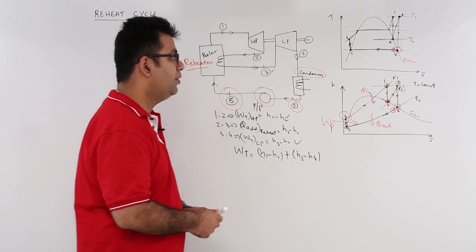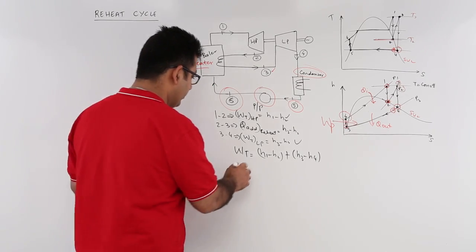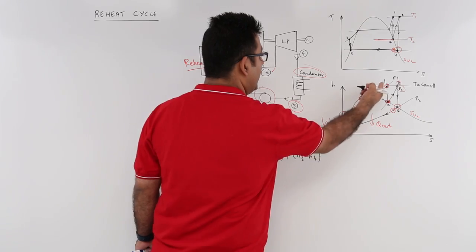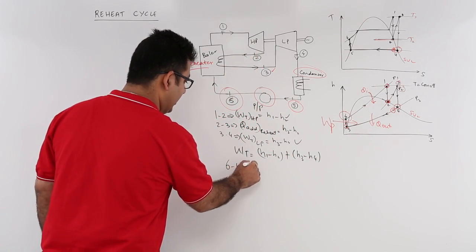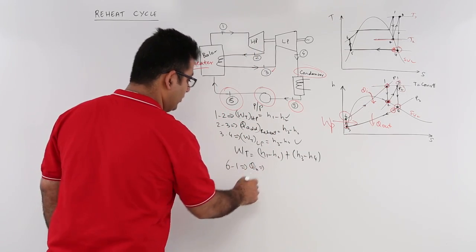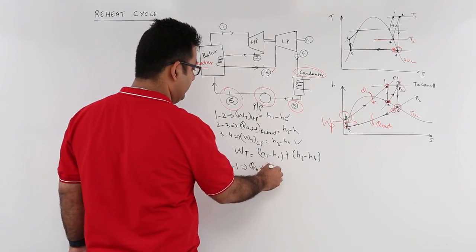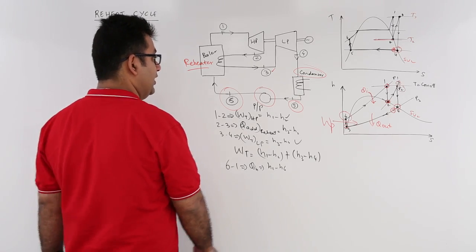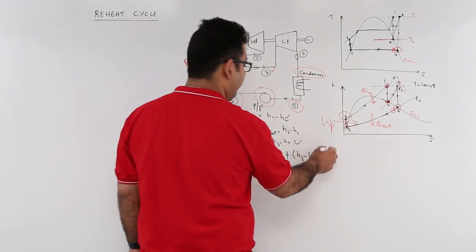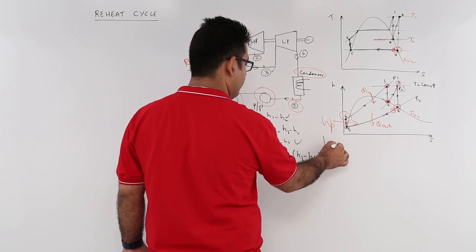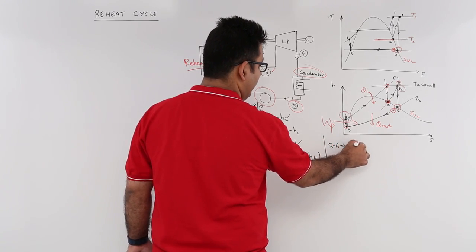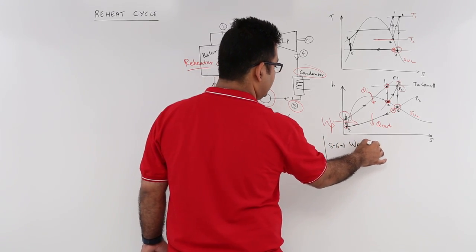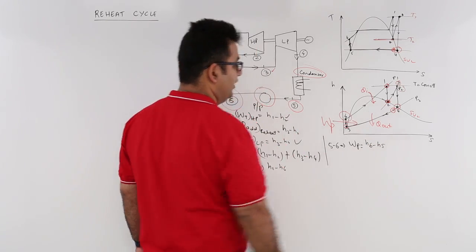The total amount of heat input from 6 to 1 is H1 minus H6. Then the process from 5 to 6 is the pump work input, which is H6 minus H5.